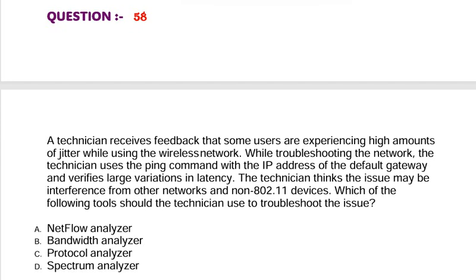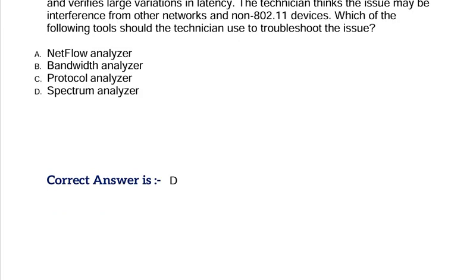Question: A technician receives feedback that some users are experiencing high amounts of jitter while using the wireless network. While troubleshooting, the technician uses the ping command with the IP address of the default gateway and verifies large variations in latency. The technician thinks the issues may be interference from other networks and non-802.11 devices. Which of the following tools should the technician use to troubleshoot the issue? Option A, NetFlow Analyzer. Option B, Bandwidth Analyzer. Option C, Protocol Analyzer. Option D, Spectrum Analyzer. Correct answer is Option D.